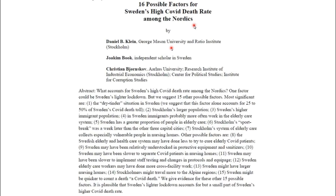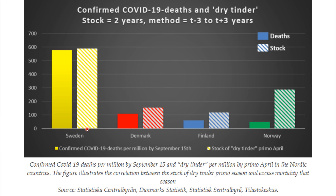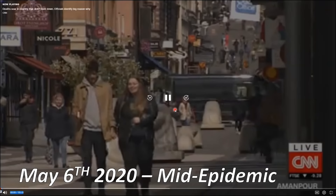A paper in 2020 showed 16 possible reasons for Sweden's higher death rate among the Nordics, the biggest being the soft prior season which set up a larger impact in 2020. Another paper at the same time showed the same phenomenon: Sweden had a large stock of potentially susceptible people going into 2020, and commensurate got a relatively big hit. Finland, Denmark, and Norway did not have the same susceptibility stock built up, so there were lots of papers published on this.